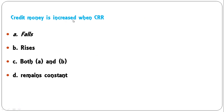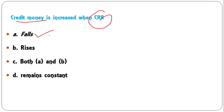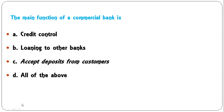Credit money is increased when CRR — falls, rises, both A and B, or remains constant? There is an indirect relation between CRR and credit creation. When credit money increases, it means CRR falls. If CRR increases, credit money will decrease. So A is the correct answer.